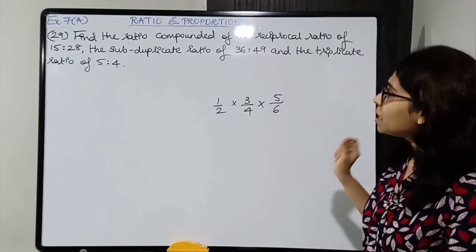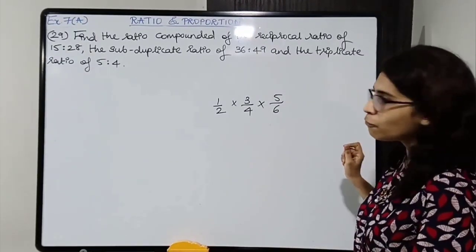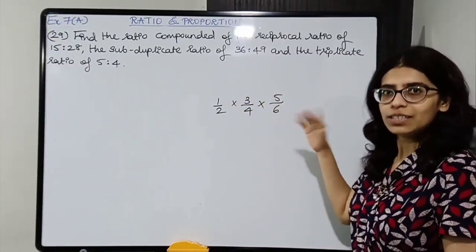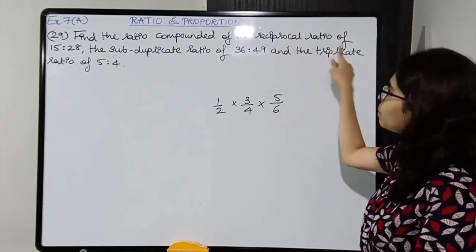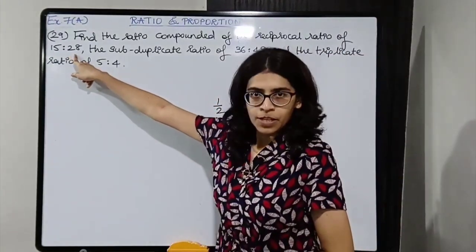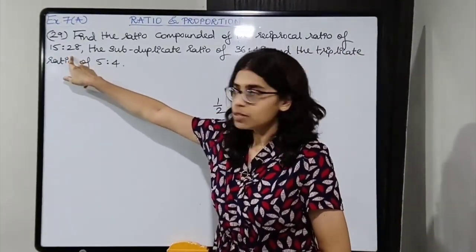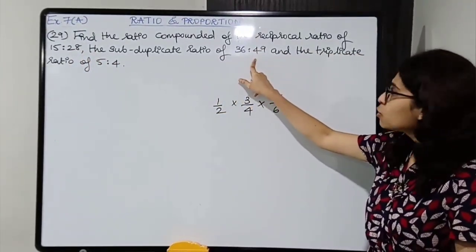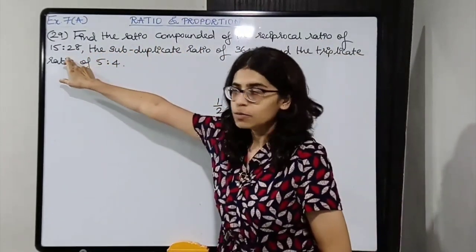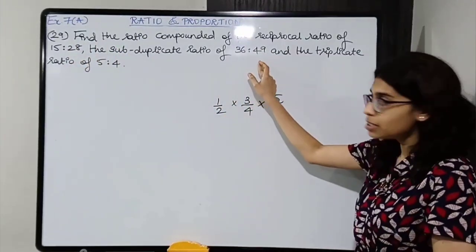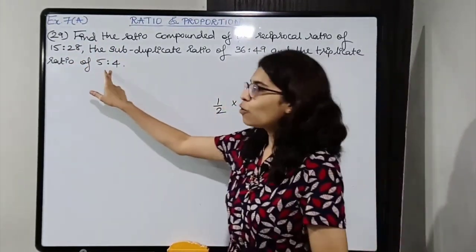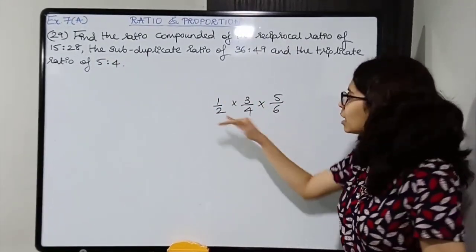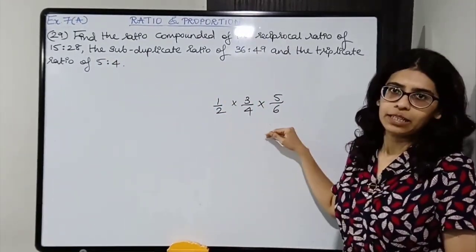Compounding means multiplying the ratios. Find the ratio compounded of certain ratios — the reciprocal ratio of 15 is to 28, the subduplicate ratio of 36 is to 49, and the triplicate ratio of 5 is to 4. Find these 3 ratios and then compound them — multiply them.